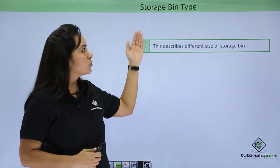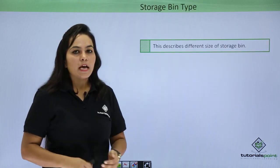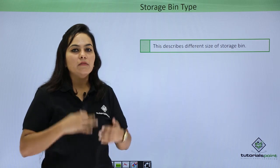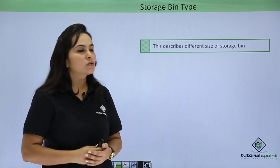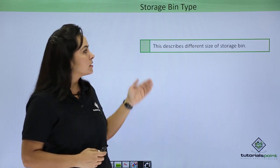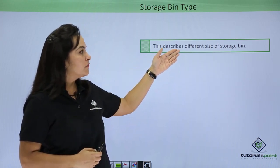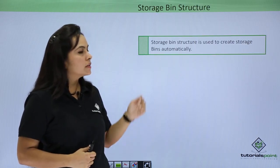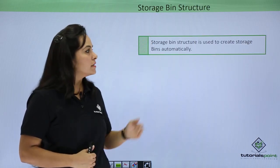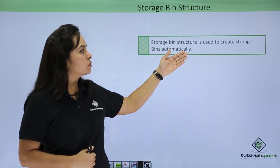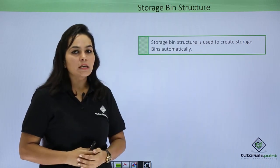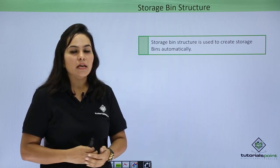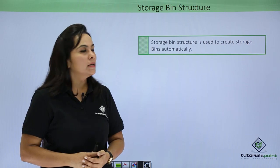Let's start with storage bin type. As we know, storage bins describe the exact position of material where it is kept. We can define storage bin type that will describe different sizes of storage bins. Next, we have storage bin structure that will help you create storage bins automatically, and that will generate a number automatically.